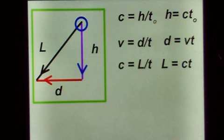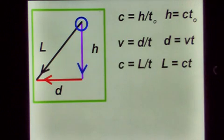However for an observer outside of the frame the light ray will now travel at an angle and will travel a different distance. The speed of light is constant. Therefore we would have c equals l over t or l equals ct.